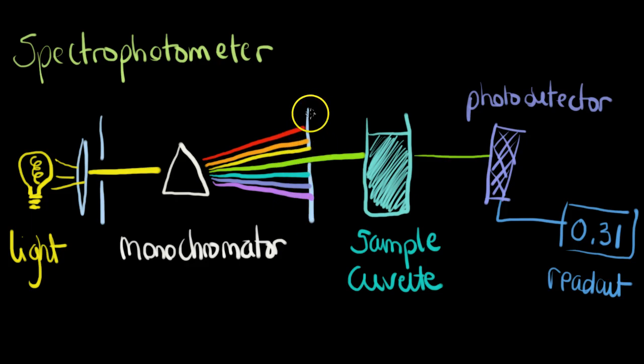Then you have an exit slit and this can be moved up and down to select whichever wavelength that is appropriate for the sample being analyzed. So here we have green coming through and we've selected green.